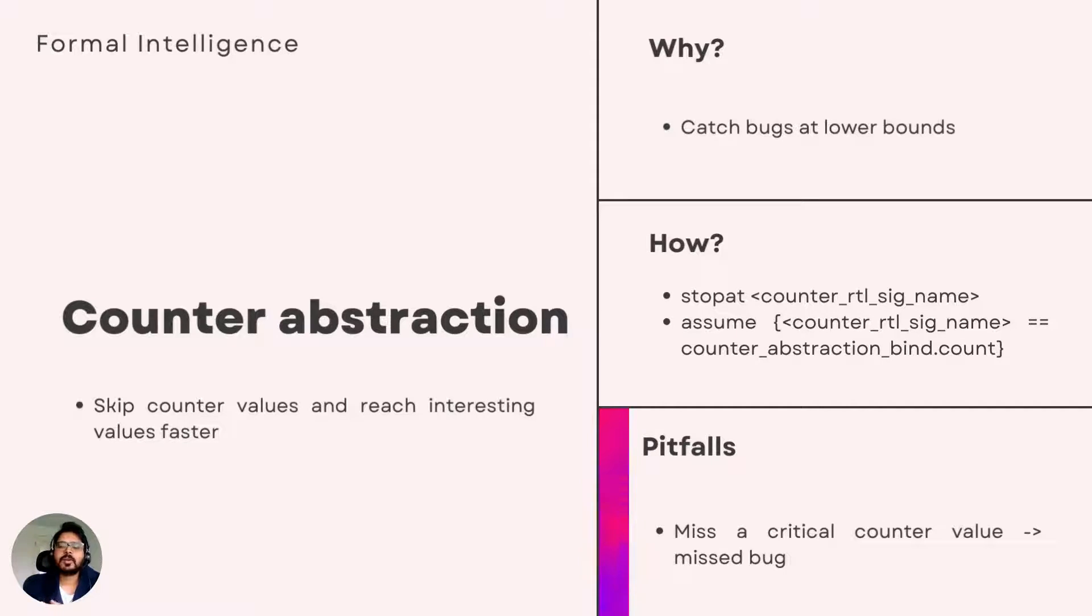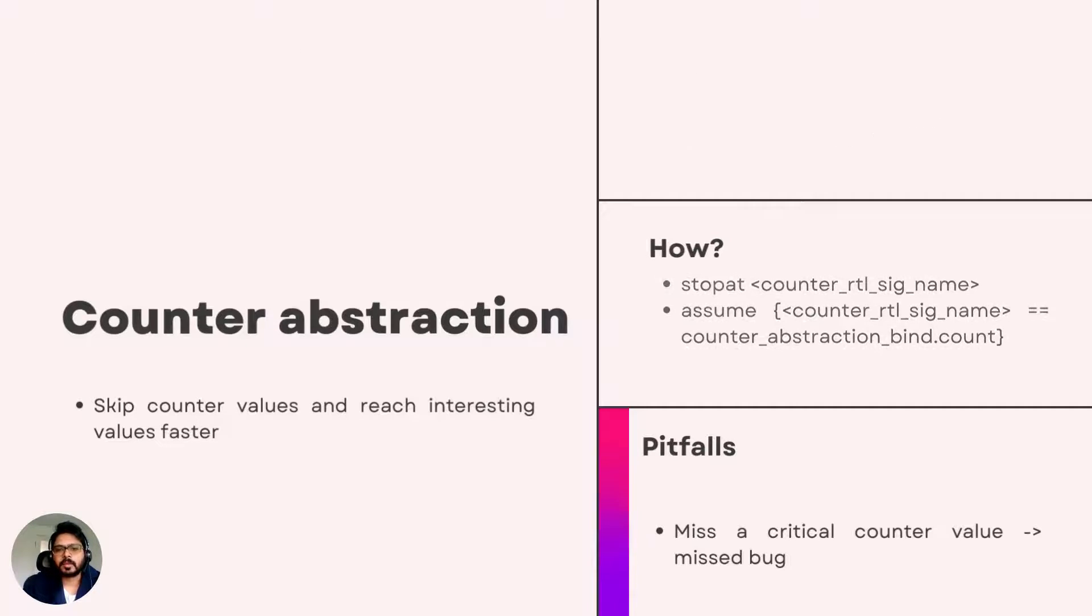There is a common mistake that people make while doing counter abstraction. It's very easy to miss a particular counter value which is important for the design functionality. And if you overlook that and don't consider that counter value, all your checks will pass and you might sign off the design saying that there is no bug, but you have masked or not considered that particular case at all and you will end up missing a bug.